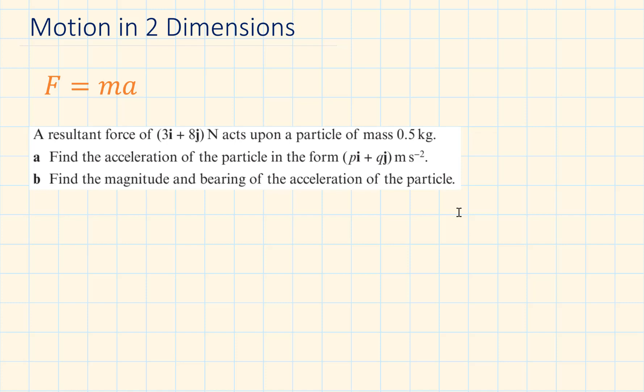A resultant force of 3i plus 8j newtons acts upon a particle of mass 0.5 kilograms. Part A, find the acceleration of the particle in the form Pi plus Qj meters per second squared. And for part B, find the magnitude and bearing of the acceleration of the particle.